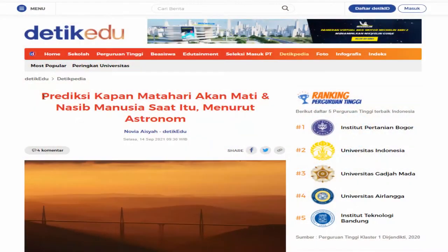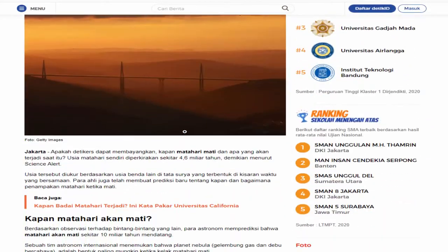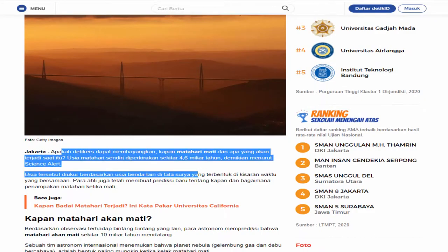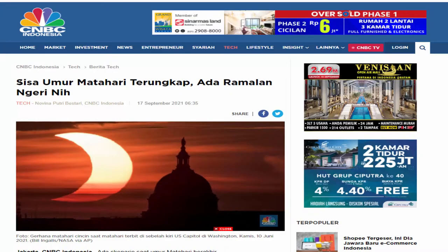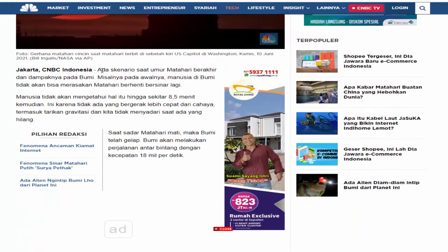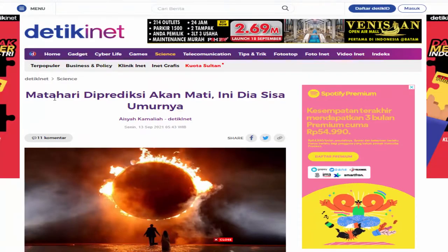Lalu, berapa lama kira-kira masa hidupnya? Menurut para astronom, diperkirakan matahari akan hidup hingga 10 miliar tahun lagi. Ini berdasarkan pengamatan bintang-bintang lainnya.